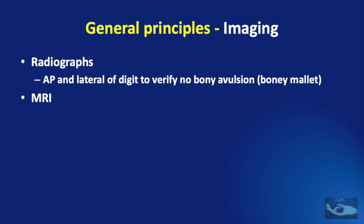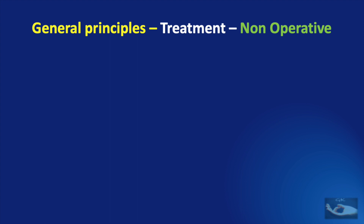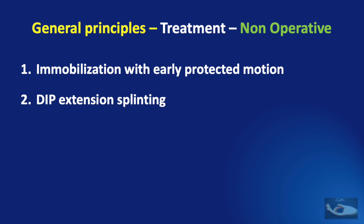The commonly used imaging modalities for extensor tendon injuries are radiographs and MRI. There are 4 main non-operative options available: immobilization with early protected motion, DIP extension splinting, PIP extension splinting, and metacarpophalangeal joint extension splinting.